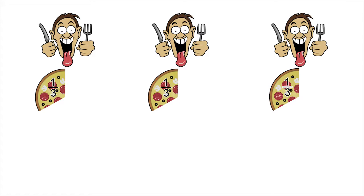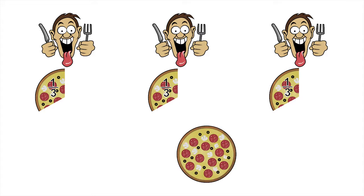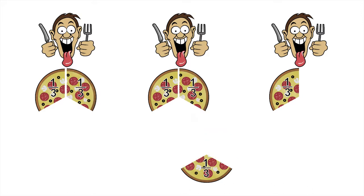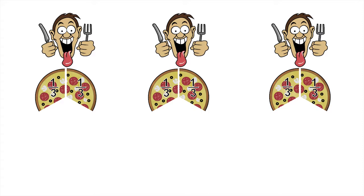Because the whole pizza has been divided into three equal sized slices and each customer gets exactly one slice. We can divide the second pizza up the same way. There are three customers, so the second pizza gets divided up into three equal sized slices. Again, each customer gets exactly one third of the second pizza.